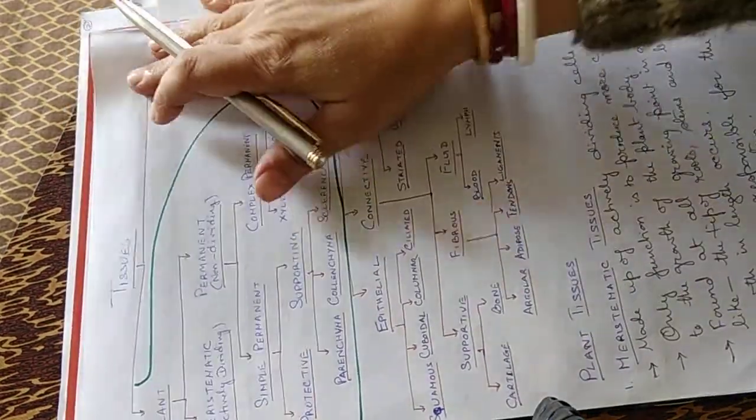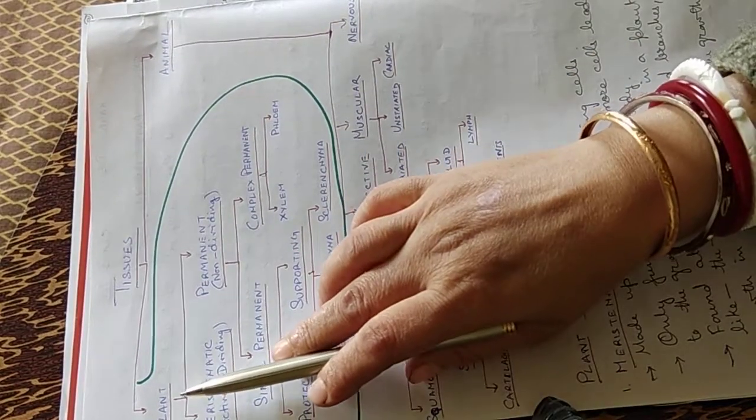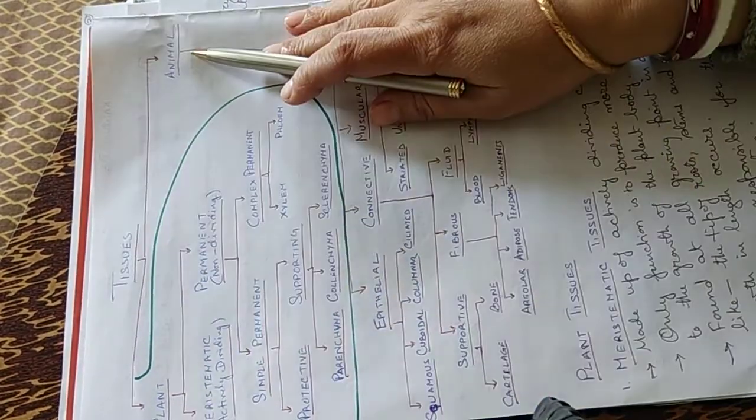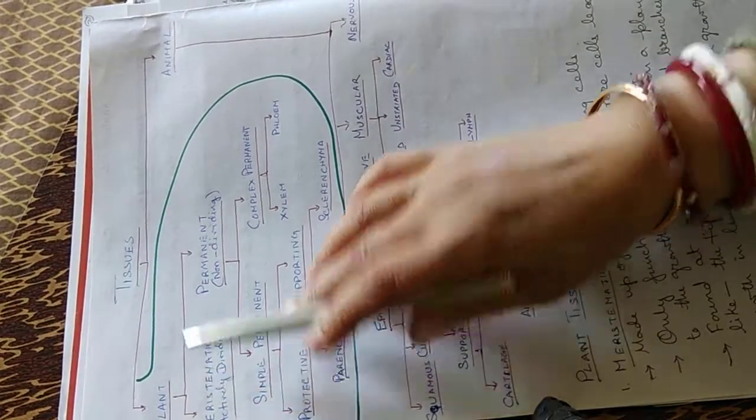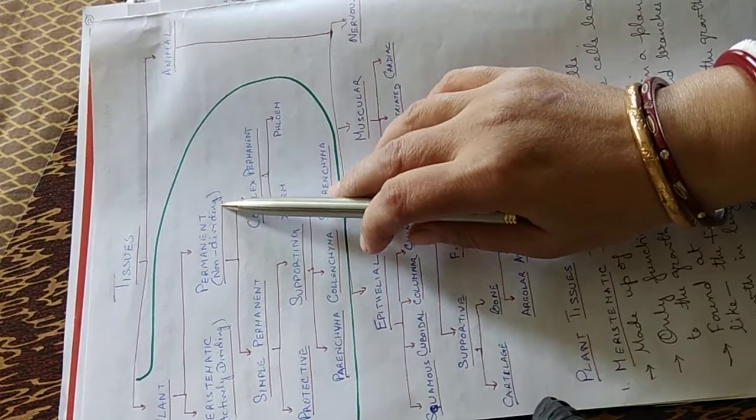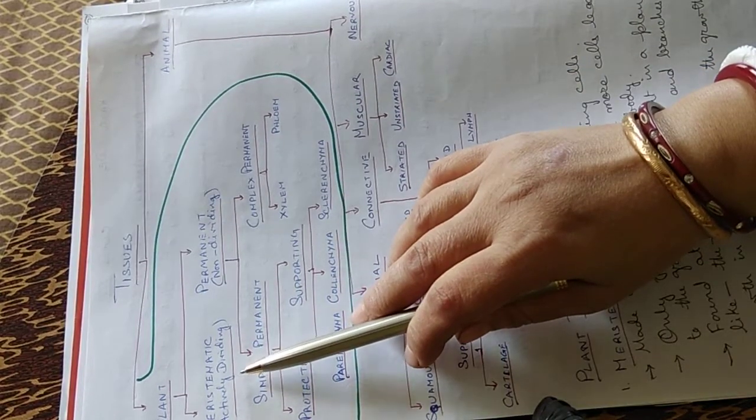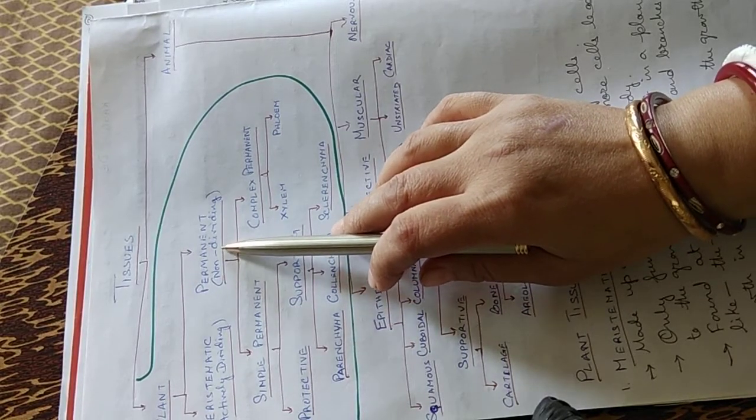Now the tissues, we will classify the tissues into two forms: plant and animal tissues. The plant tissues are of two types, meristematic and permanent. Meristematic tissues actively divide, whereas permanent tissues, they do not divide.